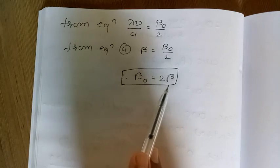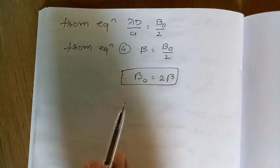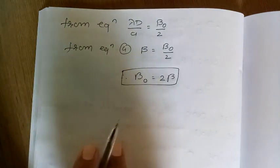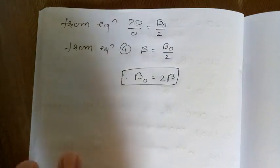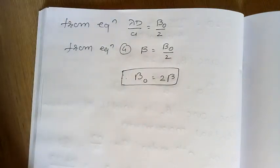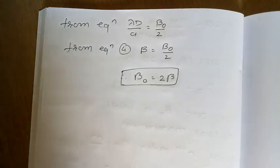So these are the formulas for the linear and angular width of the central maximum. You have to remember these formulas. Thank you.